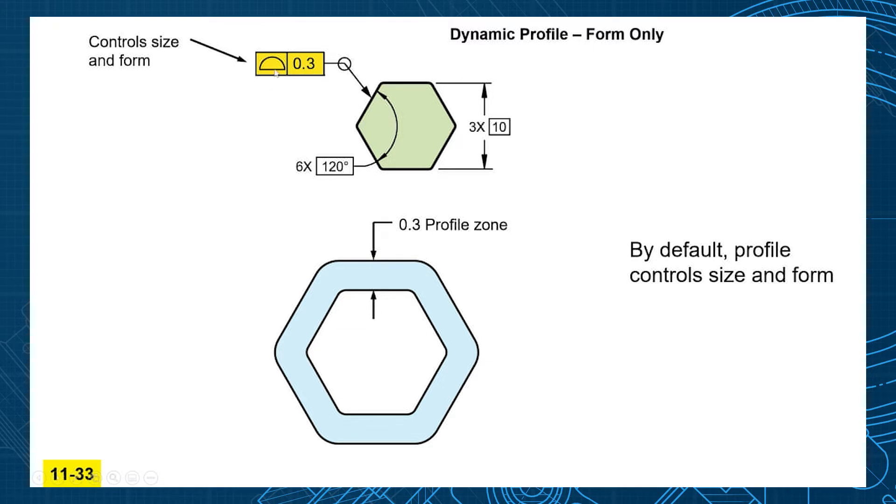Now we know our default profile tolerance is going to control both size and form. Because of the shape of the tolerance zone you have 0.3 millimeters equally distributed that's going to control how big, how small, and it also controls the form as well. However because of the larger value here you could get a shape that looks like this and technically that's inside the tolerance zone.